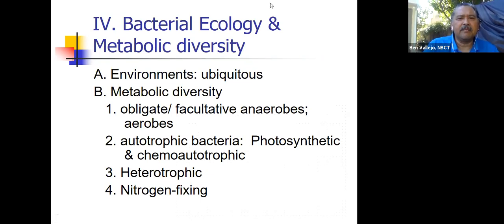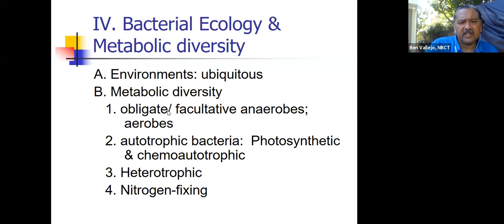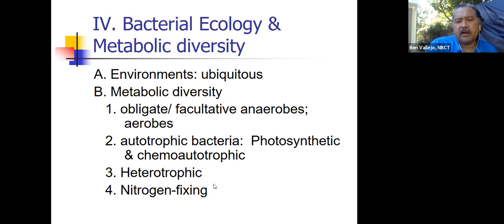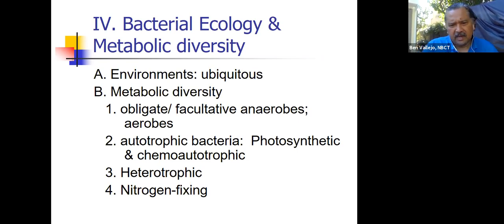The next section is on bacteria ecology and metabolic diversity. This organizing slide shows where we're going. We'll take a look at some environments where bacteria are found. Here are some terms you'll want to know: obligate, facultative, and the difference between anaerobic and aerobic. Then we'll take a look at autotrophic bacteria, which can make their own food. Most bacteria are heterotrophic. And some bacteria are nitrogen-fixing bacteria that can get nitrogen out of the air.